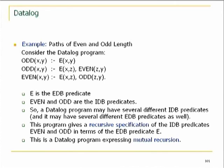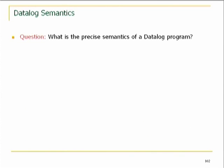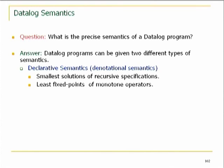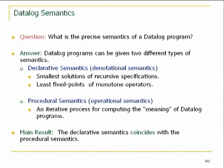What is the precise semantics of a datalog program? You can give two types of semantics: declarative semantics and procedural semantics, and then prove they match. The declarative — you can think of as denotational semantics — gives an object which is the meaning of the program. The procedural or operational gives an algorithm for computing these semantics.